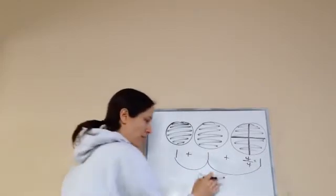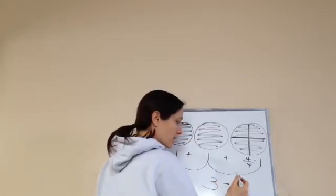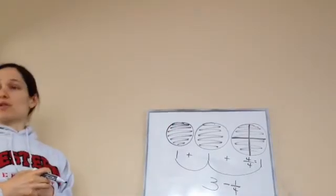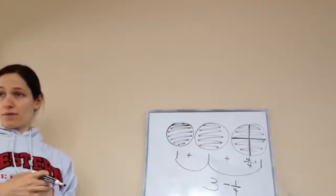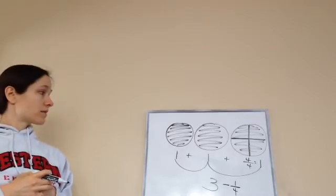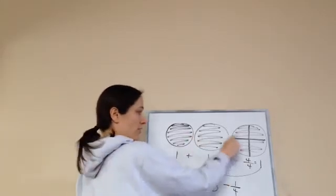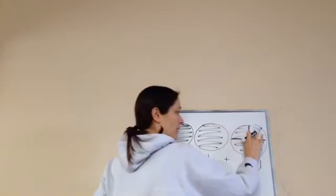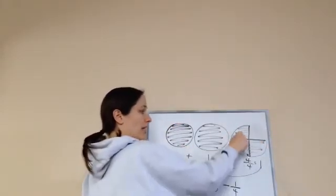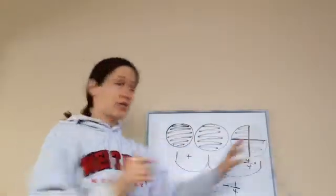So if I told you that we had 3 pies and we wanted to take away 1 fourth, how much would we have? We would have, take away 1 fourth, the 2 holes and 3 fourths. Very good. If I took away, so here's my 3 pies and I'm taking away 1 out of the 4, then I would have 2 holes and 3 out of 4.